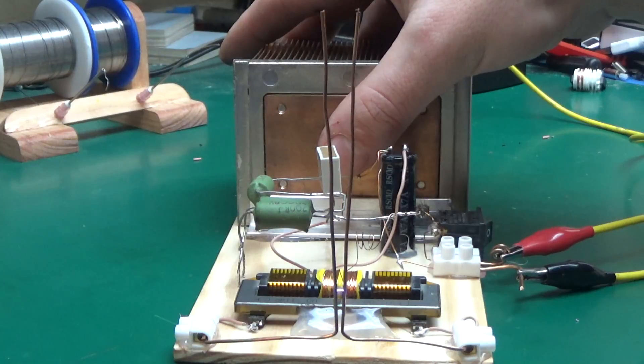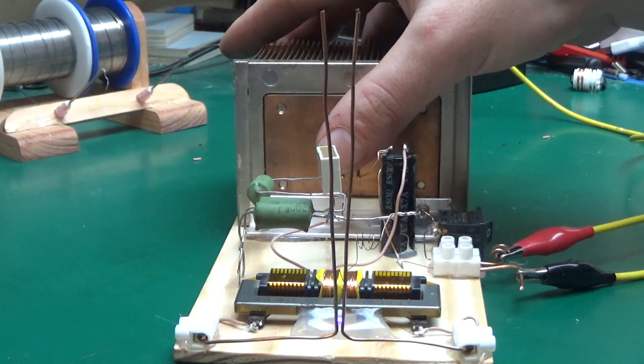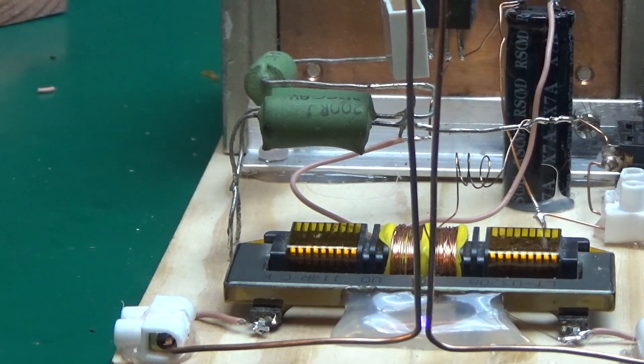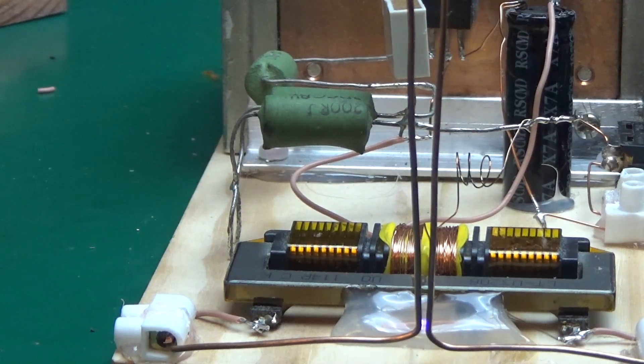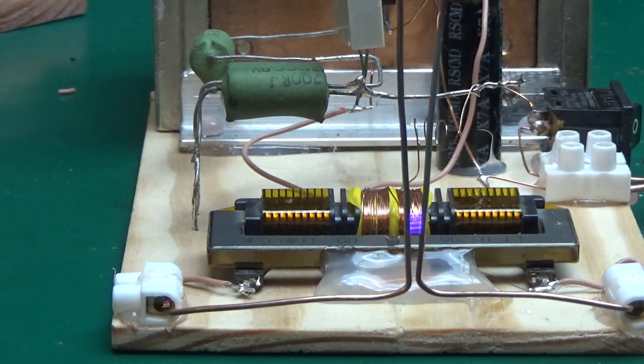There we go, we've got some reasonably active Jacob's ladder action. Now this is running at 17 volts drawing one and a half amp. I guess I could experiment with adding a few more components here and there and see what would happen, but maybe not for today.